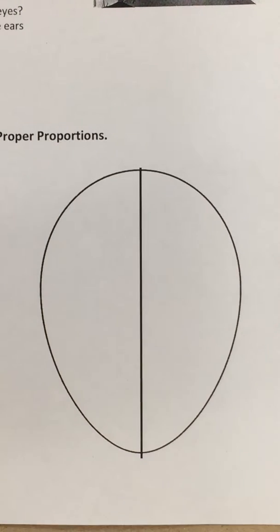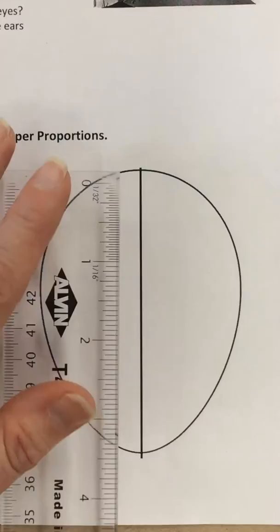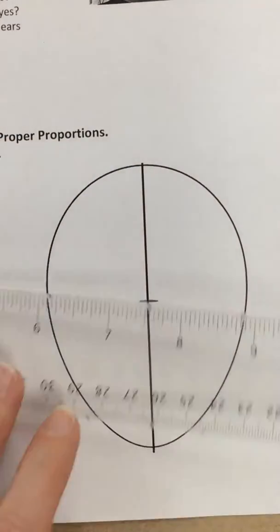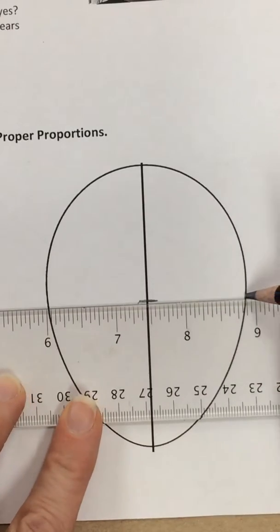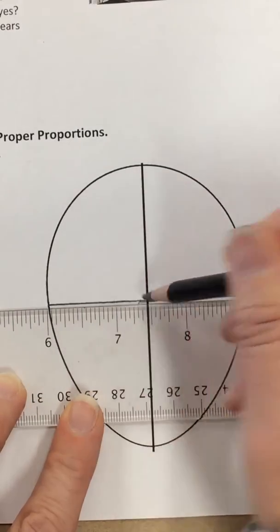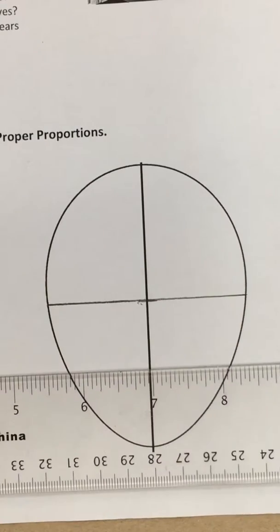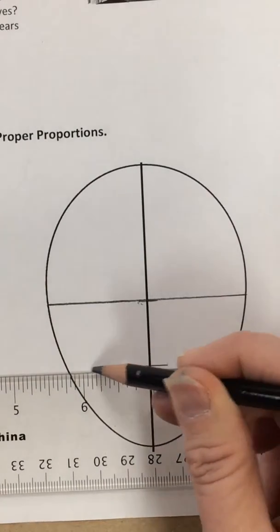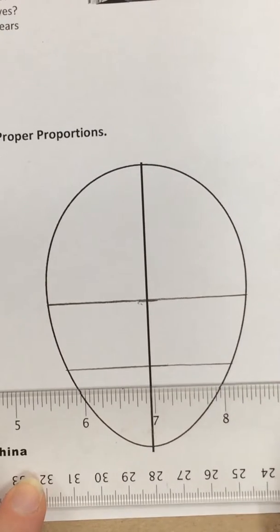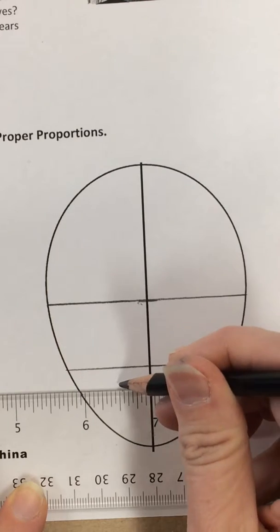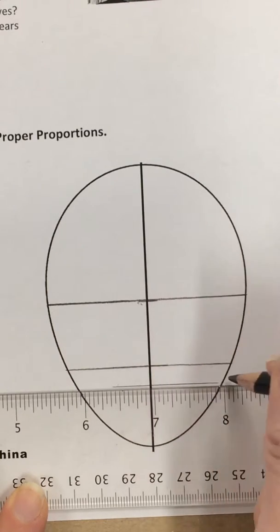We're going to place in the details of the face. I'll divide this halfway because the halfway mark is where the eyes are going to lay. If I divide that halfway again, that's where the bottom of the nose is. About a quarter of the way down is where we'll have the mouth.